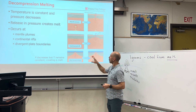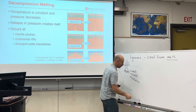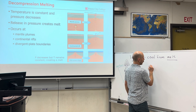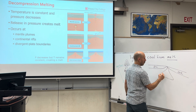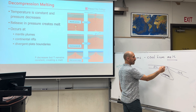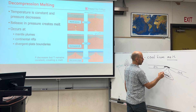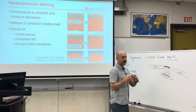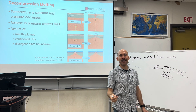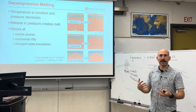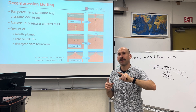Decompression melting is where the temperature remains constant, but the pressure decreases. This could happen, say, at a mid-ocean ridge — oceanic crust, magma. It's thin, so there's a lot less pressure of overlying rock above the magma chamber, causing this location to melt. The same thing happens at continental rifts and at mantle plumes or hot spots like Hawaii or Yellowstone. Decompression melting is when overlying material is removed, decreasing the pressure, but the temperature remains the same, causing the mantle material to melt.